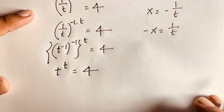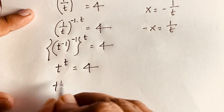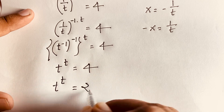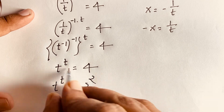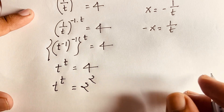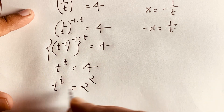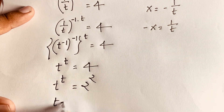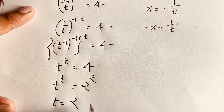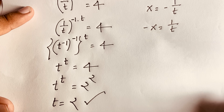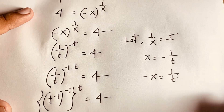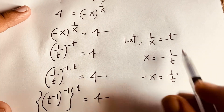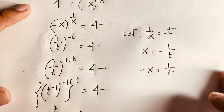We now have t to the power t is equal to 4, which is 2 to the power 2. You can use the Lambert W function here. We find that t is equal to 2. But recall that t was defined as negative 1 over x.